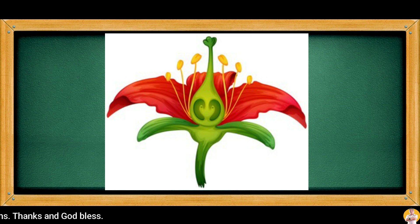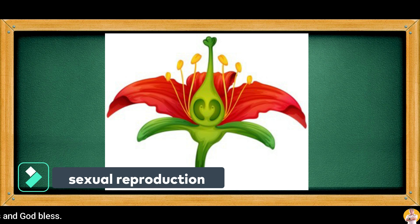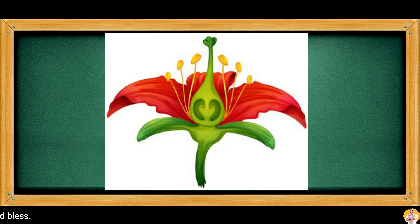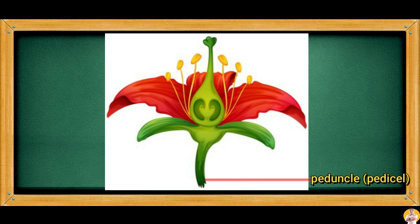When seeds are produced, it means the plant performs sexual reproduction. Different parts of the flower are involved in this process. The peduncle, also called the pedicel, is the stalk of the flower that is important to hold the fruit. The receptacle is the thickened stem part attached to the peduncle, and it is where the flower or group of flowers grows.